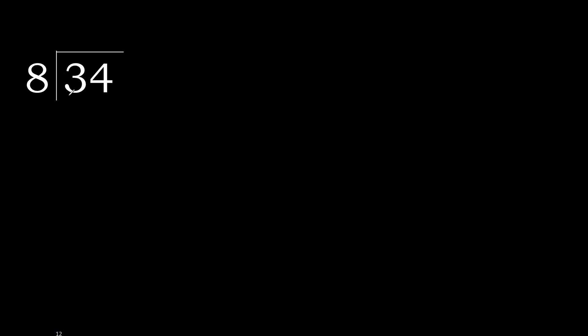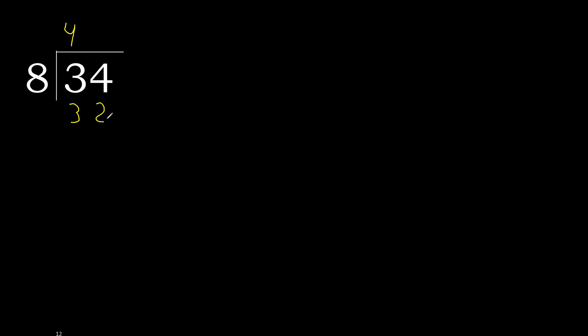34 divided by 8. 3 is less, therefore next. 34 is not less, therefore work with 34. 8 multiplied by which number is nearest to 34 but not greater — 8 multiplied by 5 is greater. 8 multiplied by 4 is 32, which is not greater. Subtract: 34 minus 32 equals 2.